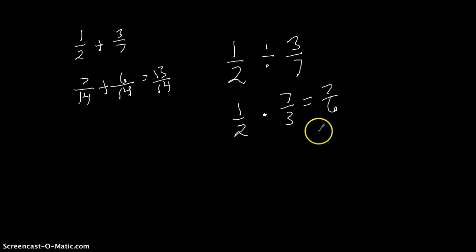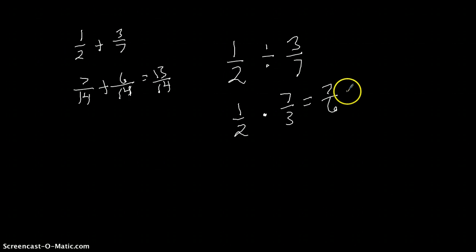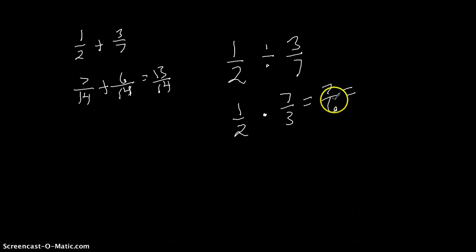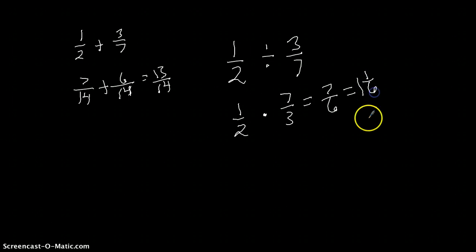I always want to simplify my fractions, so I'm going to simplify this one. This is what we call an improper fraction — the numerator is a greater value than the denominator. To simplify, I have to figure out how many times six will go into seven. Essentially, when you have a fraction you are dividing. Six will go into seven one time with one left over, and six stays as my denominator. So that would be one and one-sixth.